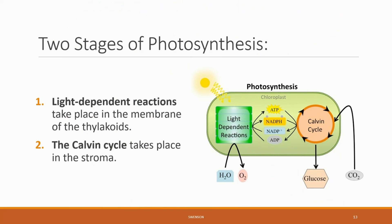Photosynthesis has two main stages. The light-dependent reactions are those that literally involve sunlight and occur along the thylakoid membranes. Because the light-dependent reactions are membrane-based chemistry, they most similarly resemble oxidative phosphorylation of aerobic cellular respiration. The Calvin cycle uses the energy and electrons harvested in stage one to synthesize biomolecular compounds by assimilating carbon dioxide. This process occurs in the stroma of a chloroplast.